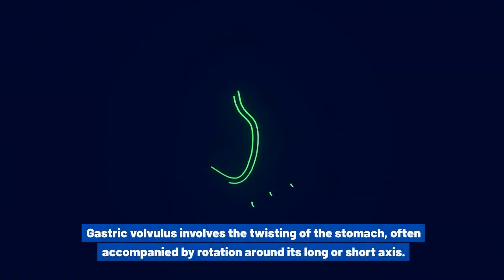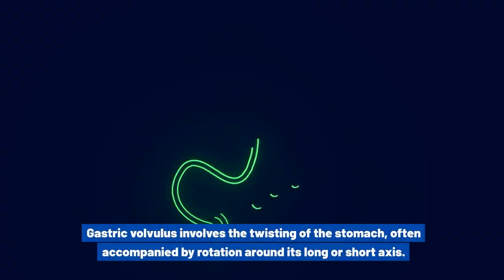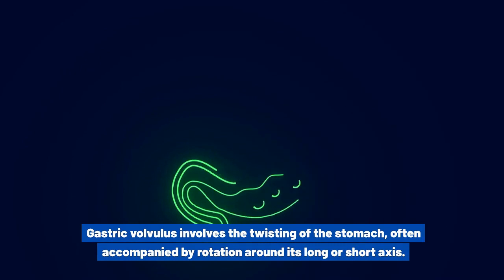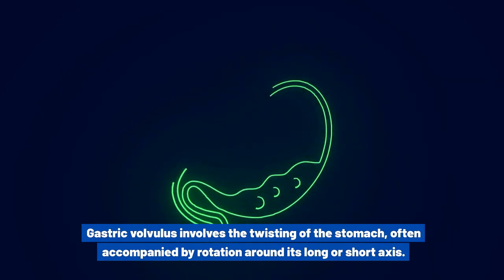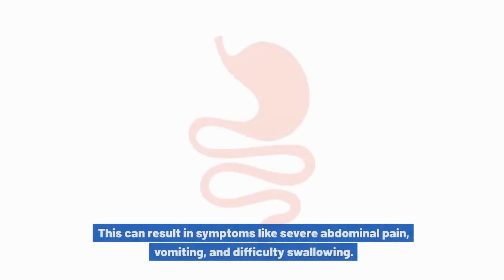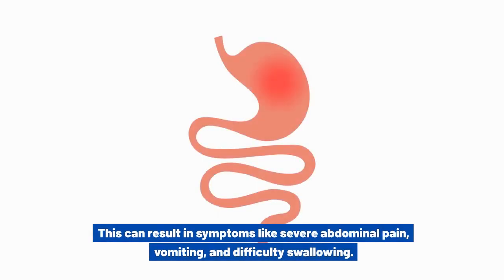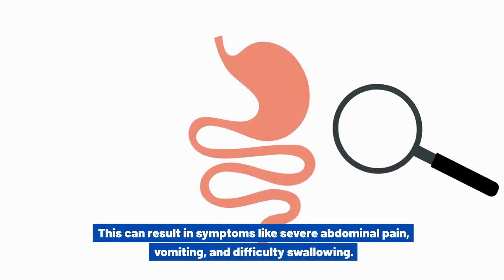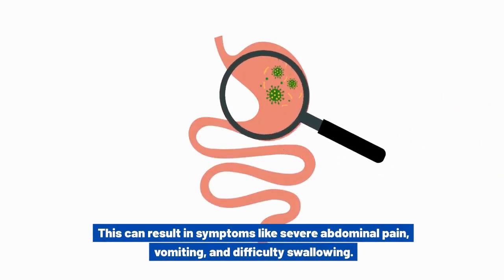Gastric volvulus involves the twisting of the stomach, often accompanied by rotation around its long or short axis. This can result in symptoms like severe abdominal pain, vomiting, and difficulty swallowing.